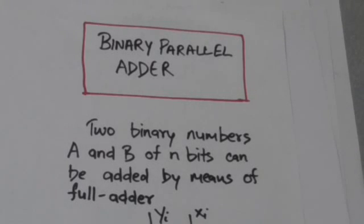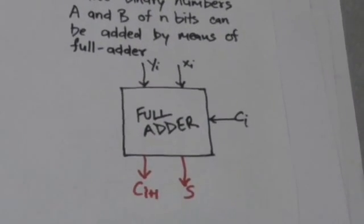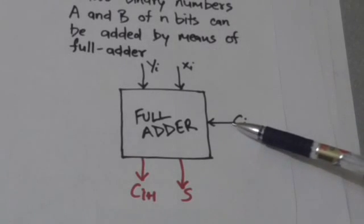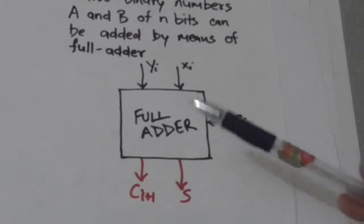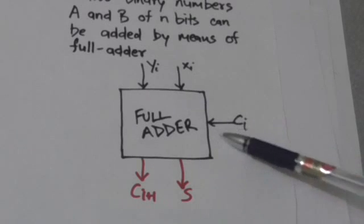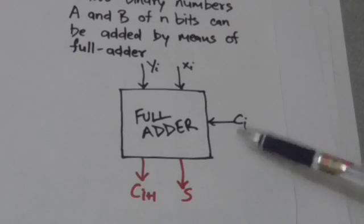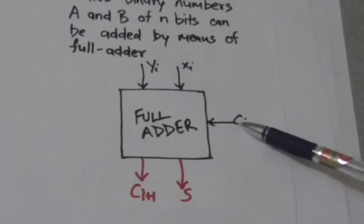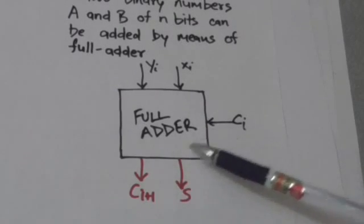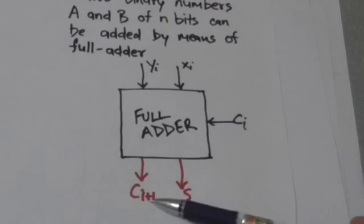Hello friends, welcome back. In this tutorial we will study about binary parallel adder. Two binary numbers A and B of m bits can be added by means of full adder. A full adder is a combinational circuit which adds two bits and a previous carry, producing a sum bit and a carry bit. We will call the previous carry the input carry, and the carry produced by the full adder the output carry.